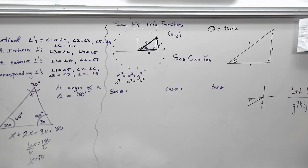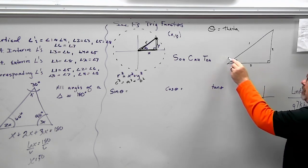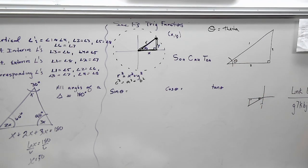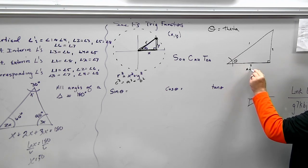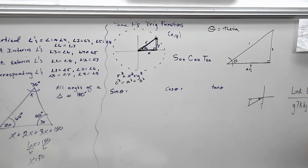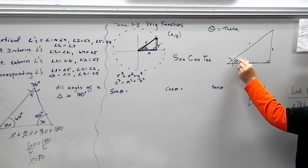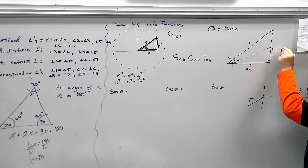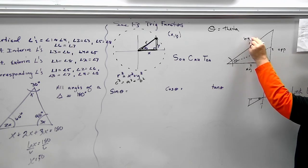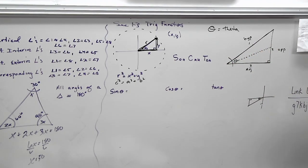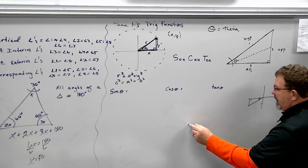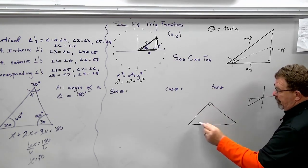Looking at this angle measure theta: which side — one, two, or three — would be the adjacent leg? Two. Side two is my adjacent. What would be my opposite leg? Three — it's the side you hit if you drew a line right through the angle. The hypotenuse is always the longest leg, always opposite the 90-degree angle. Make sure you understand what is opposite, hypotenuse, and adjacent.